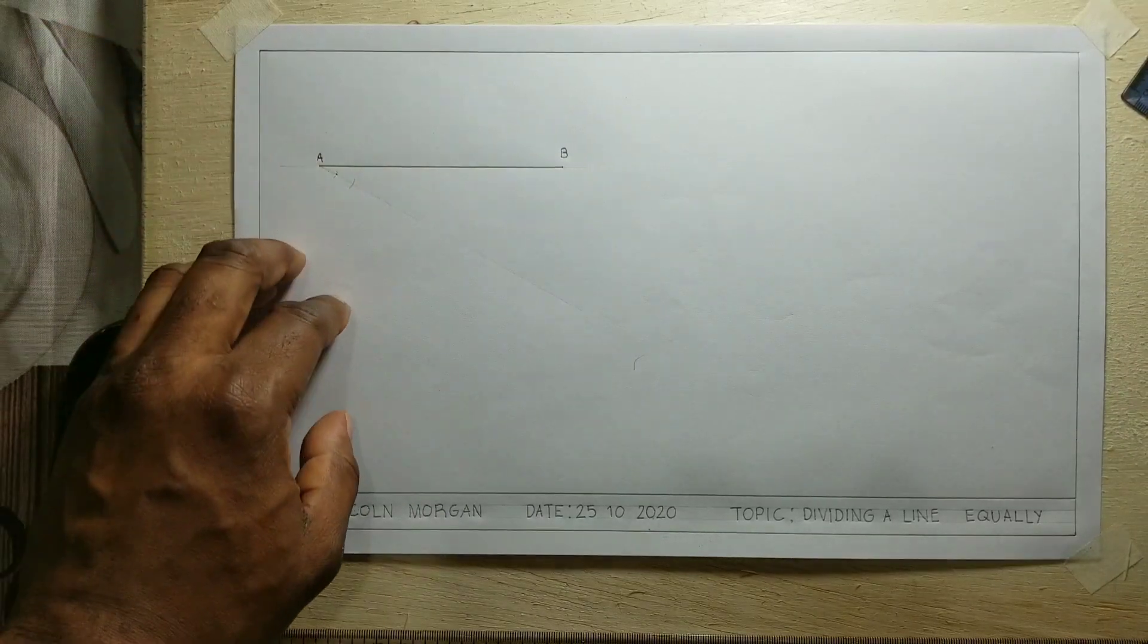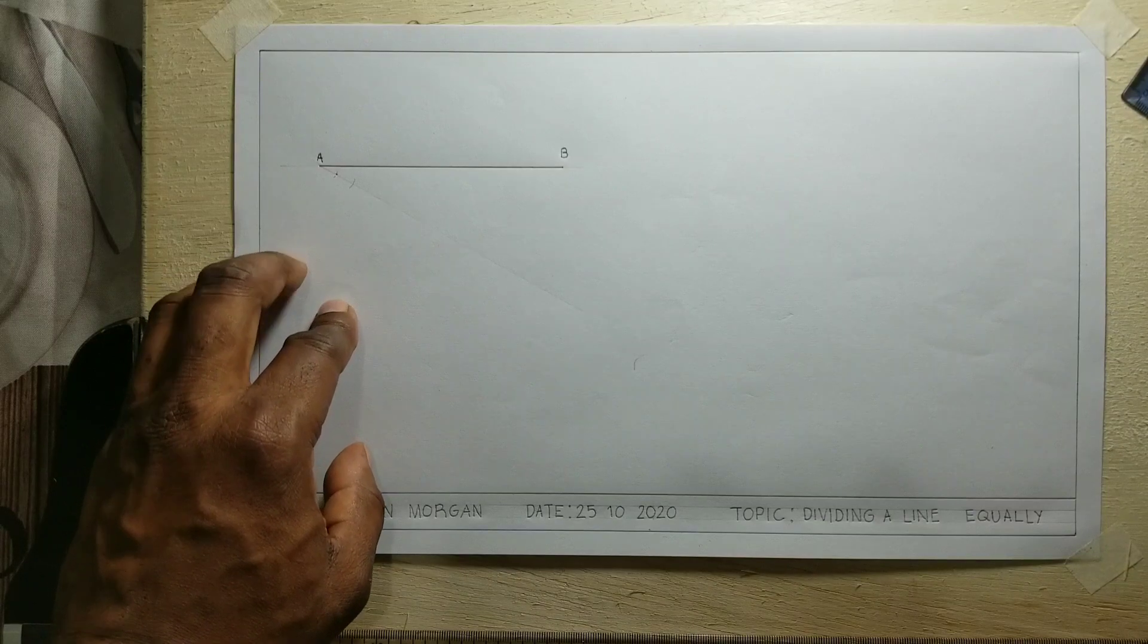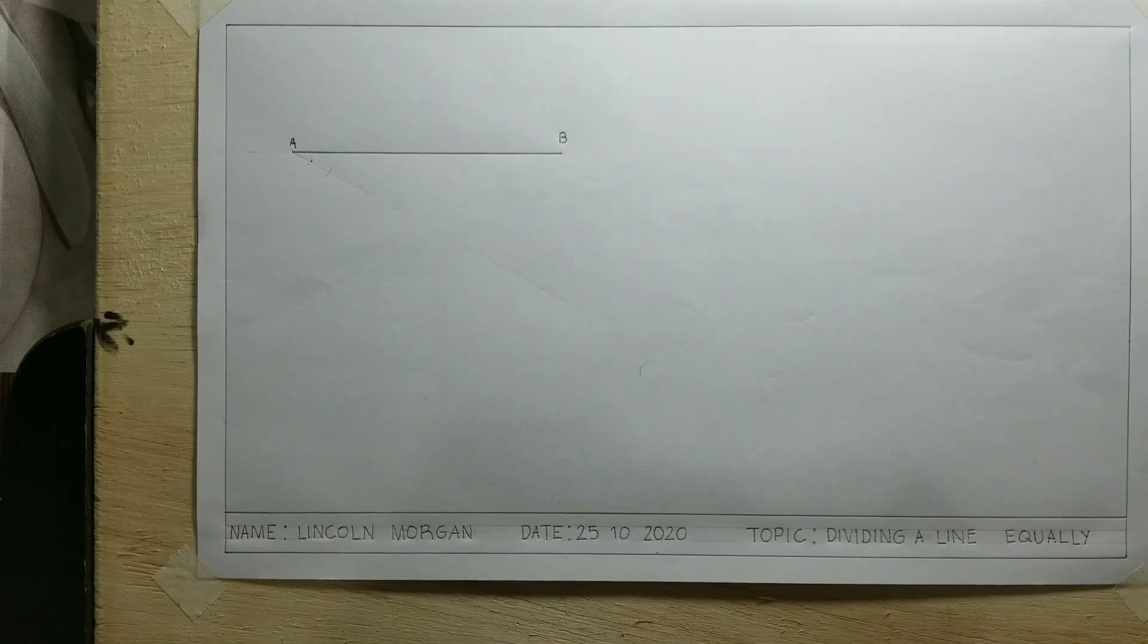Now these marks that we are making are called arcs, so I'll be making some more marks on our line. We have just done the second one, I'll be going up to 10.